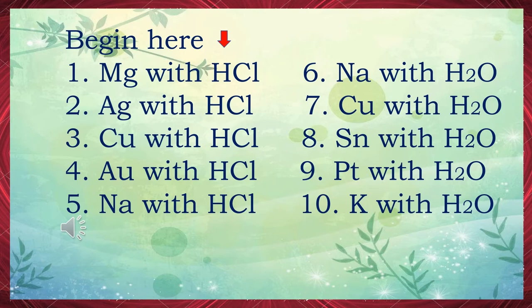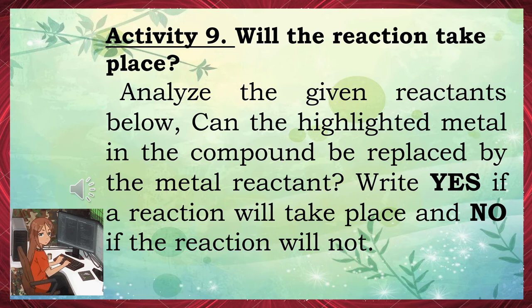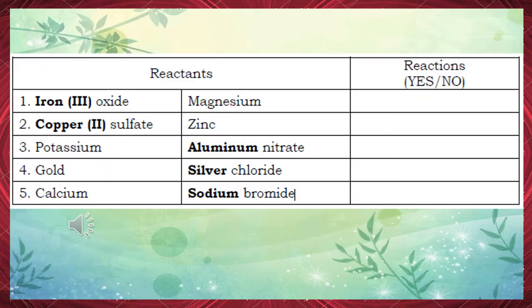Activity 9: Will the Reaction Take Place? Analyze the given reactants. Can the highlighted metal in the compound be replaced by the metal reactant? Write yes if a reaction will take place and no if it will not. Number 1: Iron(III) oxide and magnesium — yes. Number 2: Copper(II) sulfate and zinc — yes. Number 3: Potassium and aluminum nitrate — yes. Number 4: Gold and silver chloride — no. Number 5: Calcium and sodium bromide — no.